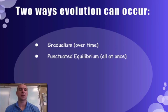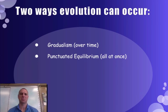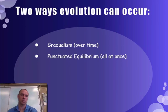Two ways evolution can occur are gradually and punctuated. Gradual evolution happens very slowly over time — this is what Darwin envisioned. Punctuated equilibrium would be all at once due to some catastrophic event. If you think about humans, we've basically been unchanged for the last 200,000 years, so if we ever do evolve, it probably won't be gradually — it'll be punctuated. Something will happen: a nuclear holocaust, storms hitting the Earth, global warming taking over. The gene pool will shrink and a new species will emerge.